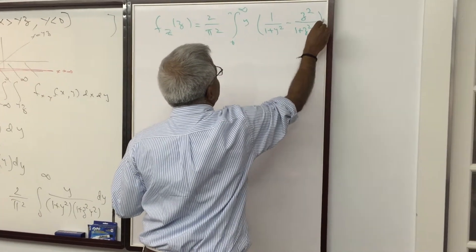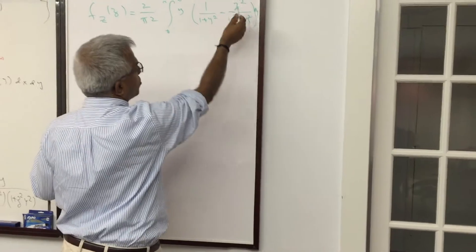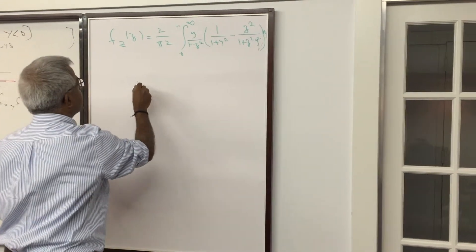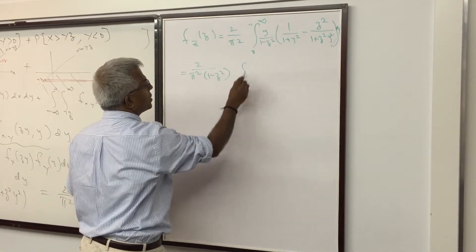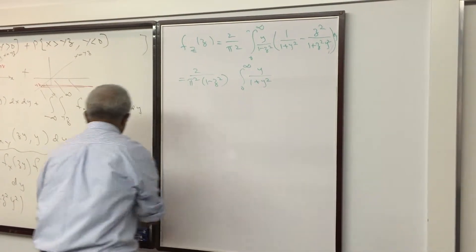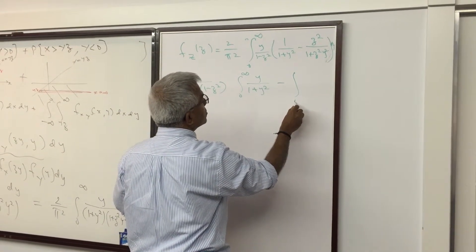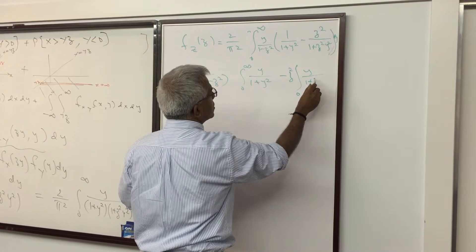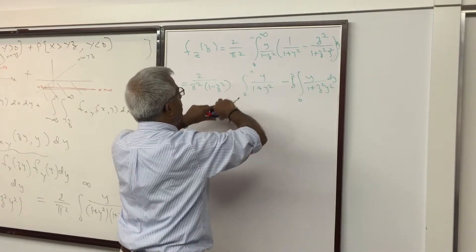We have the integral of 1/[(1 + Y²)(1 + z²Y²)] dY from 0 to ∞. Notice that the Y²z² terms allow us to apply partial fractions. After simplification, one factor in the denominator gives (1 − z²), and we are left with 2/π² · (1 − z²) times an integral of Y/(1 + z²Y²) from 0 to ∞.